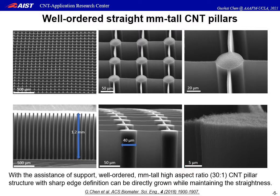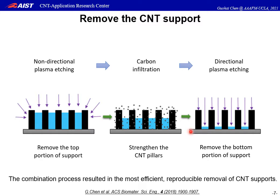The initial aspect ratio is about 30 to 1. Next, we need to remove the support. We use a combination process. First, a non-directional plasma etching to remove the top part of the support, followed by carbon infiltration to strengthen the pillars. Then, a directional plasma etching to completely remove the bottom part of the support. This combination process resulted in the most efficient and reproducible removal of the CNT support.